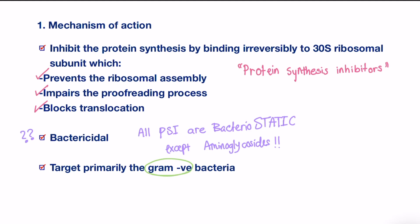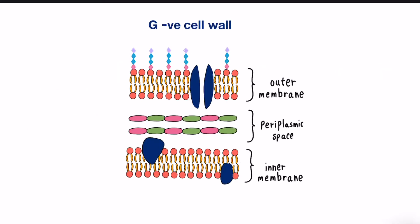For example, gentamicin, which is an aminoglycoside, is used in the treatment of pneumonia caused by Klebsiella pneumoniae, a gram-negative bacterium. The difference in action against gram-positive and gram-negative bacteria is thought to be due to their membrane structure. In gram-negative bacteria, there is a double membrane structure consisting of outer and inner membranes separated by a periplasmic layer, also known as the cell wall.